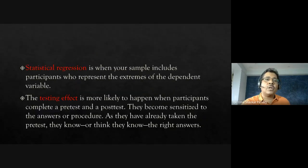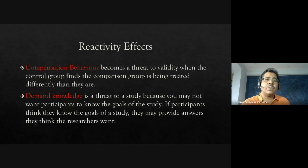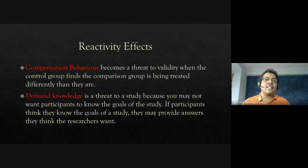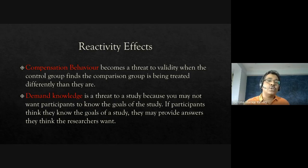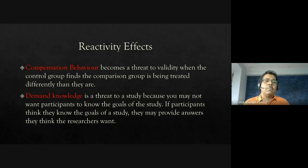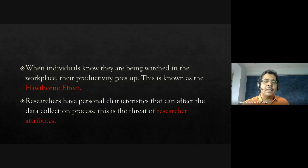There are six more validity threats. Compensation behavior occurs when the control group sees the experimental group receiving special treatment and responds differently or gets frustrated. Knowledge is also a problem: if you tell participants they are being tested for something, they may provide answers they think the researcher wants — desirable responses rather than honest ones.